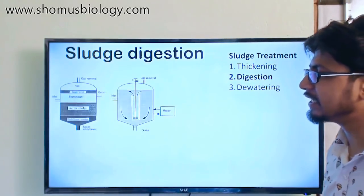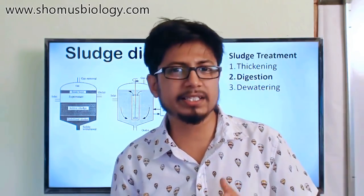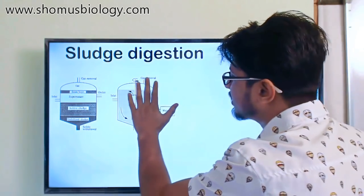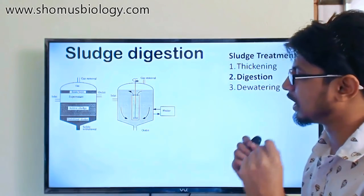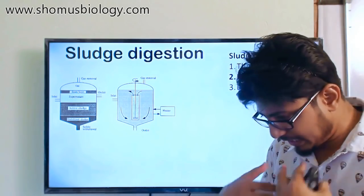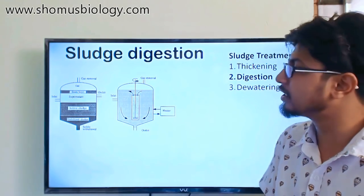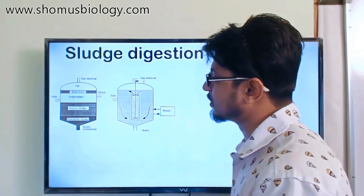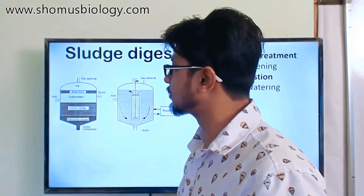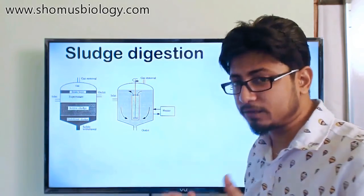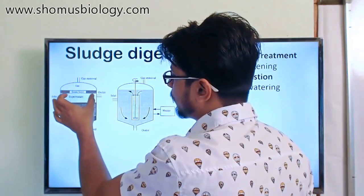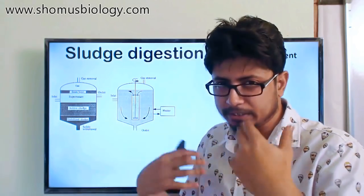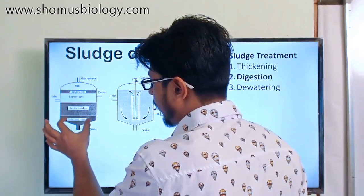The second stage is digestion. The sludge contains many microorganisms and produces strong odor, so we heat it at high temperature to kill microorganisms and reduce odor. This generates a lot of gas from microbial death and chemical reactions, which is removed through a gas nozzle. After heating, the chamber contains distinct layers: a scum layer of fat components floating on top, a supernatant water layer above, then active sludge, and stabilized sludge at the very bottom.